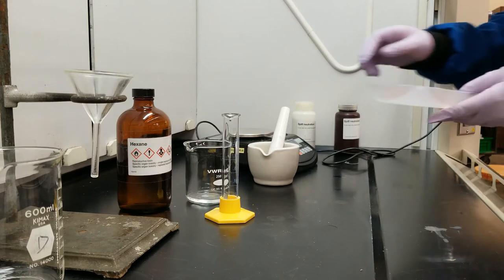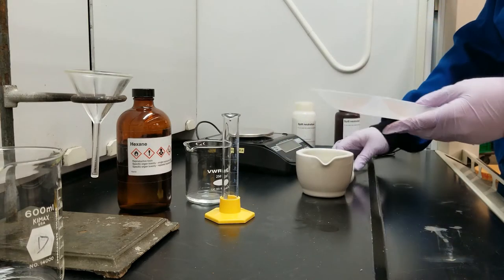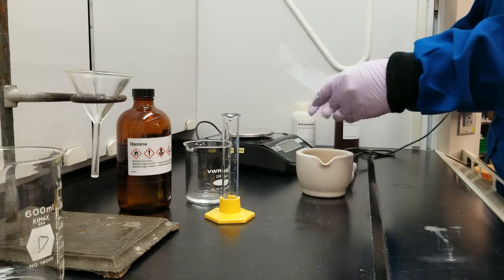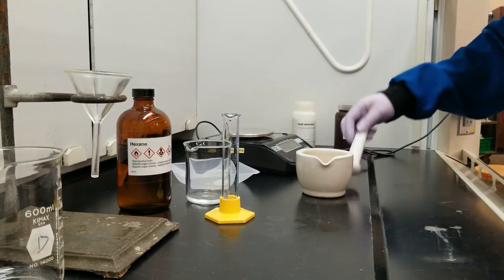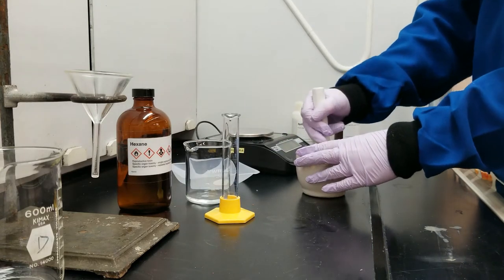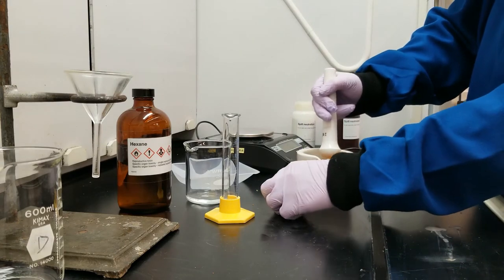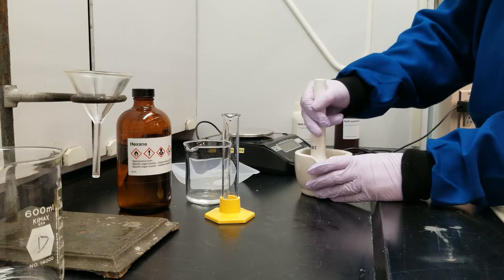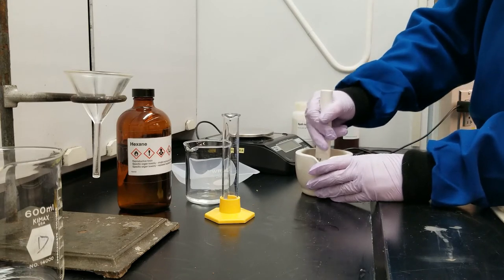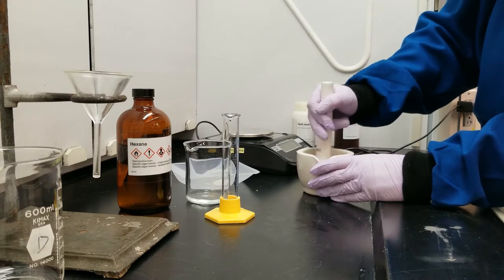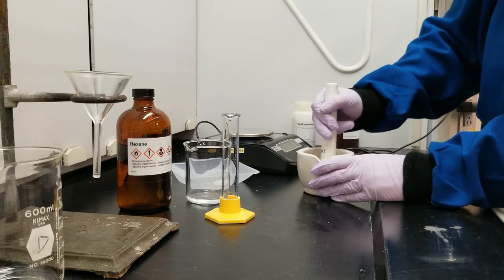Then I'm going to take my ten grams of potato chips, and I'm going to put them in my mortar and pestle. The mortar is the bowl bit, and I'm going to grind them up with my pestle, which is the stick bit. Trying to keep all my potato chips in here. This is so we can increase the surface area of the potato chips so they interact better with my solvent.